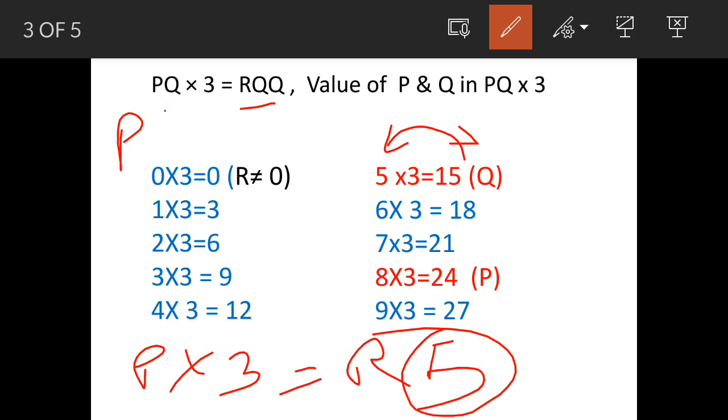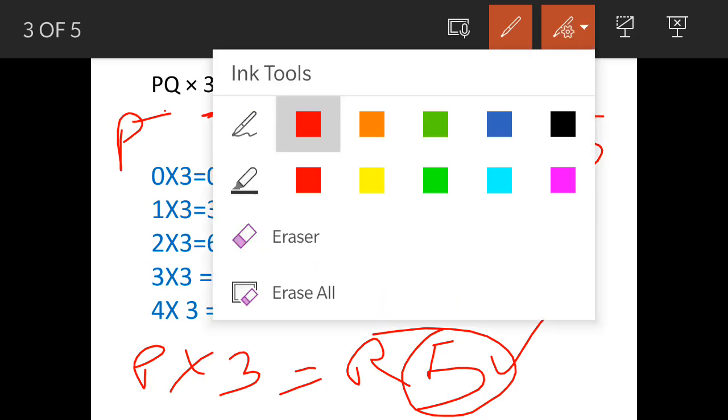So when P is multiplied by 3 we should get multiplication result as 5. Now remember that here it is 15 and we have adopted 5. So 1 is still in carryover. So that means if the end number is 4 then that can be adopted as value of P. But this number should be in two digits. That means P when multiplied by 3 the output should be in two digits and the end number should be 4. I will erase the markings.